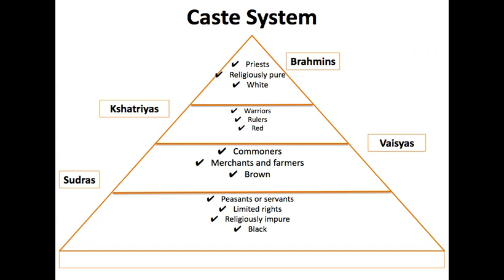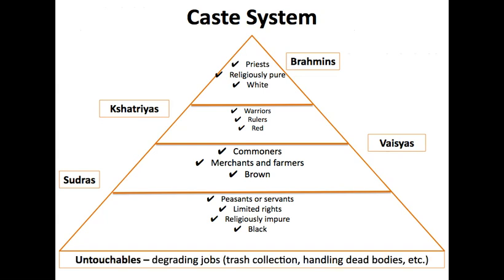The group within the caste that I hadn't mentioned yet — and one you need to add to your notes — is the group that is the lowest of the low. They're referred to as untouchables. These are people who are absolutely destitute in a lot of situations. The only kinds of jobs they can have are considered degrading — trash collection, handling dead bodies — and if you didn't have a job, this is where you would fit.